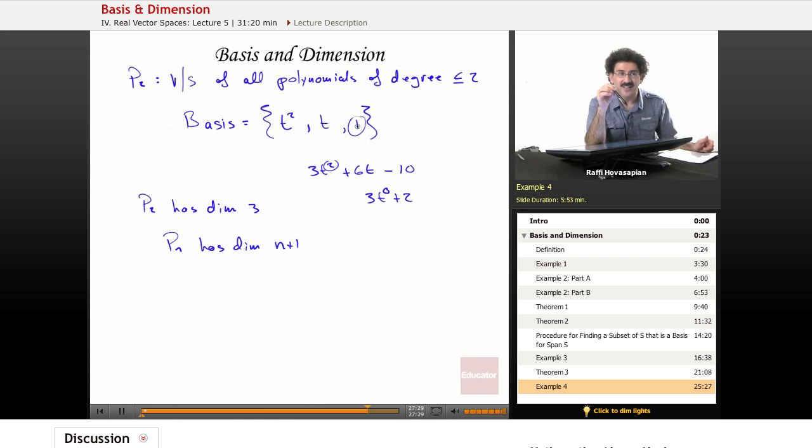As it turns out, all vector spaces of a given dimension, the only difference between the vector spaces is the identity of their elements. In one vector space, R3, we're talking about points or vectors, arrows.